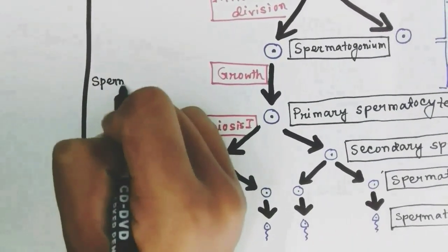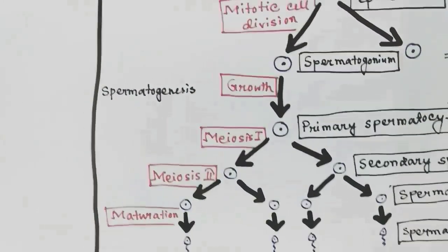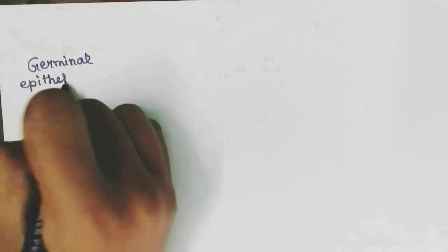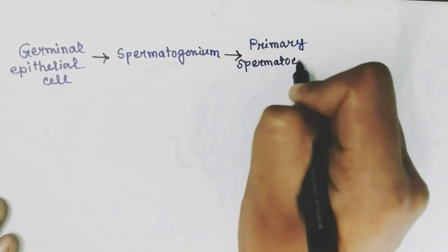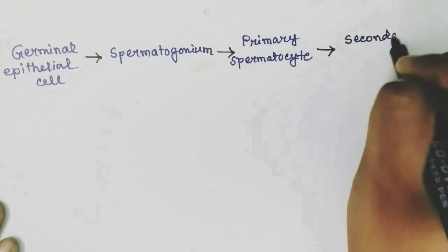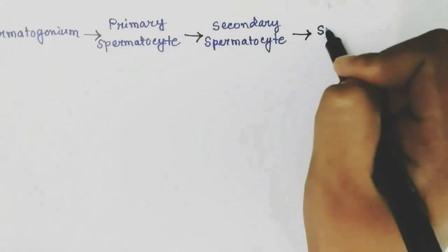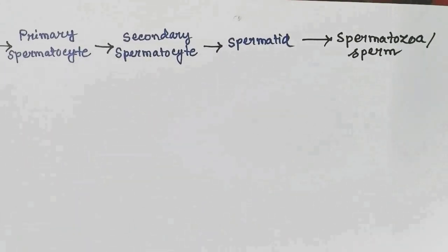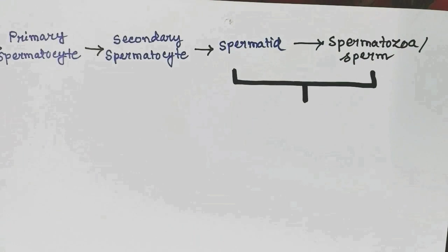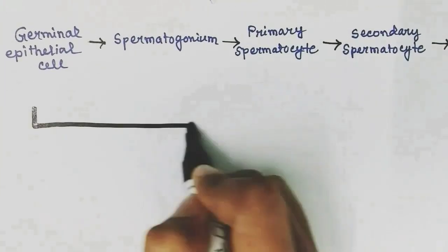To recap: germinal epithelial cell → spermatogonium → primary spermatocyte → secondary spermatocyte → spermatids → spermatozoa. The formation from spermatid to spermatozoa is called spermiogenesis. The entire process from germinal epithelial cell to sperm is known as spermatogenesis.